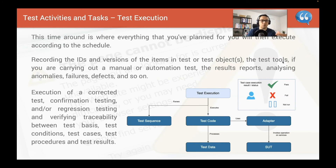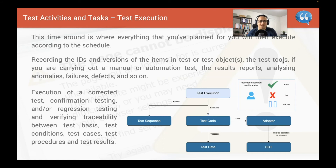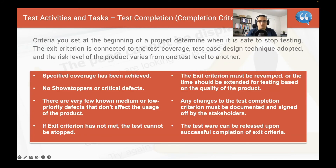Test execution: once you have everything ready, execute according to the schedule you've planned. This is where you record the IDs and versions of the tests, the test items, the test objectives, and the test tools. Some tests will be manual and some automated. This is where you capture the results, analyze any anomalies - failures, defects, and so on - and raise the bugs. Whether you use a spreadsheet or a tool like Azure DevOps, JIRA, Test Complete, or Zephyr, it's essentially pass, failed, or not run yet.